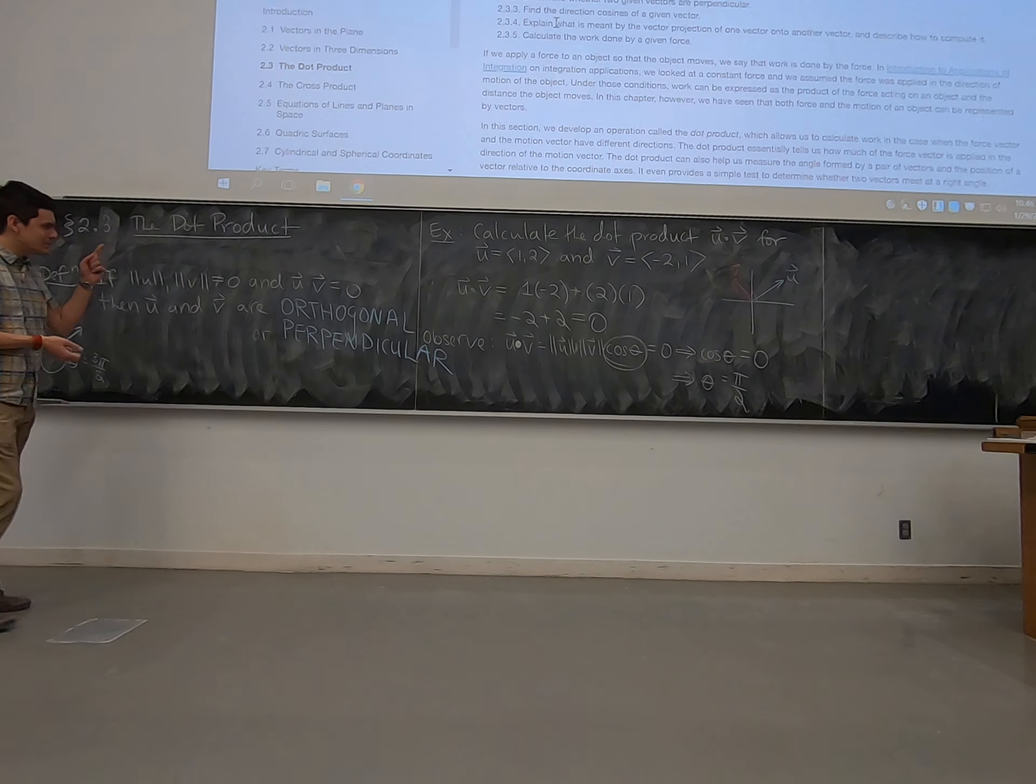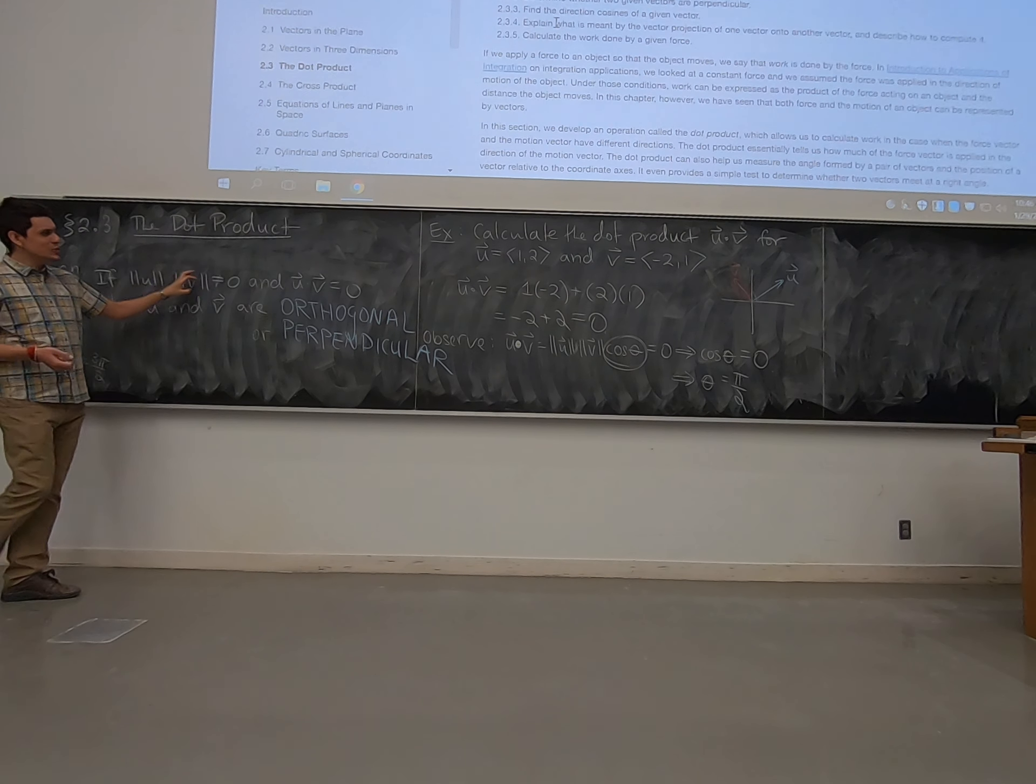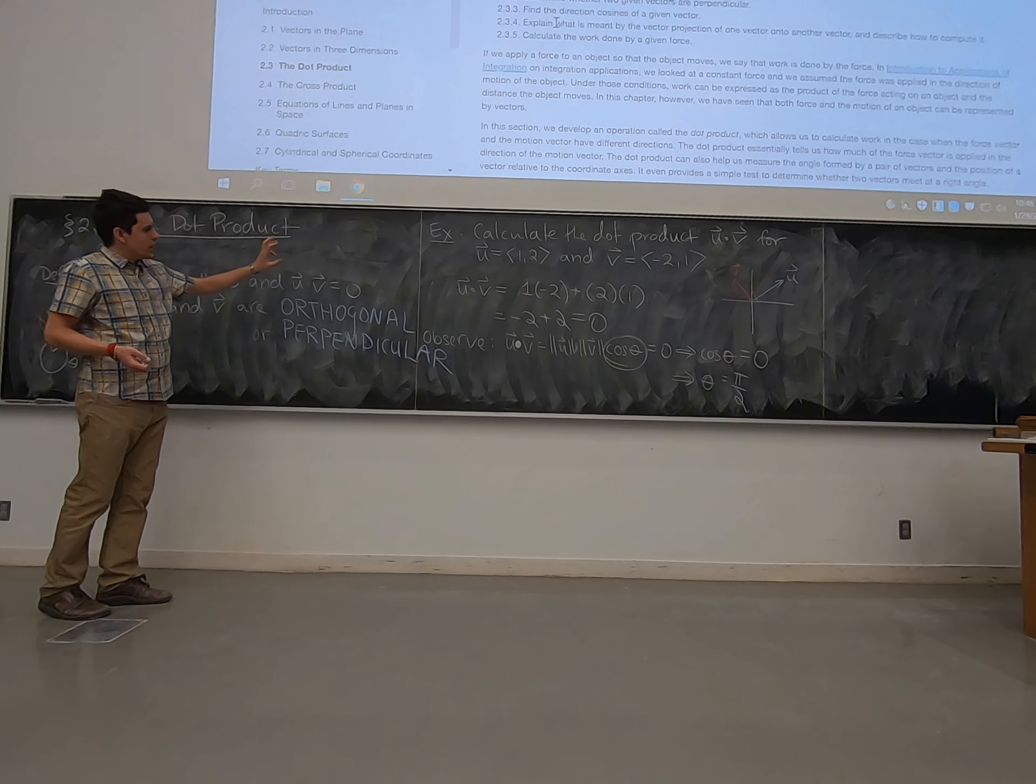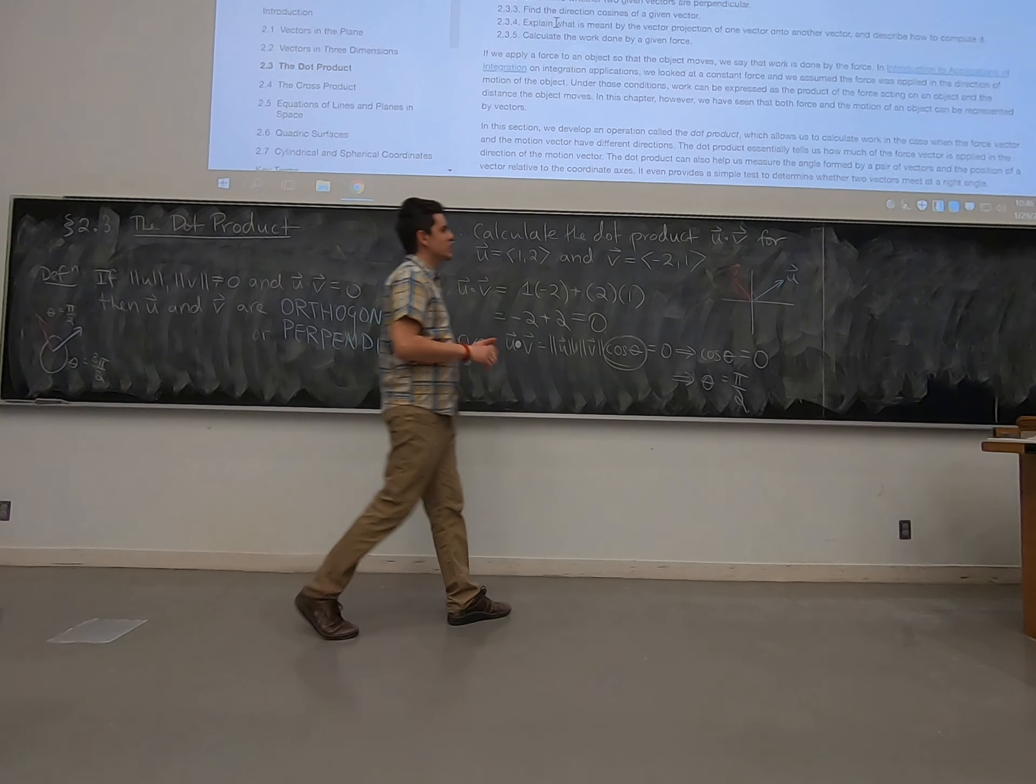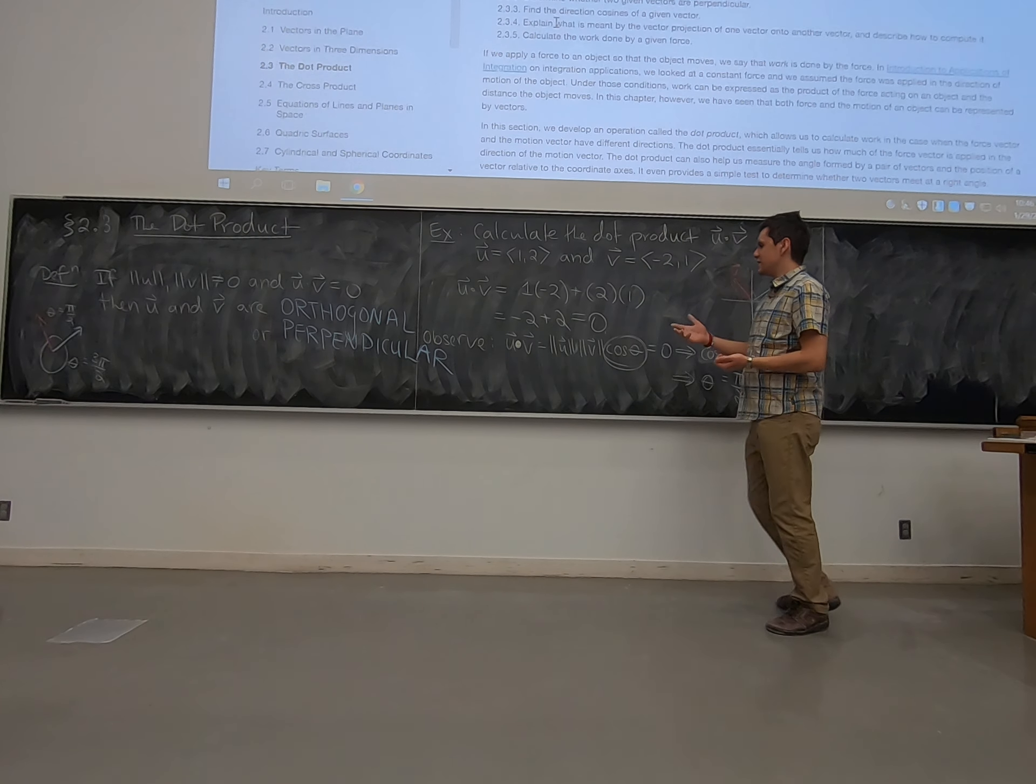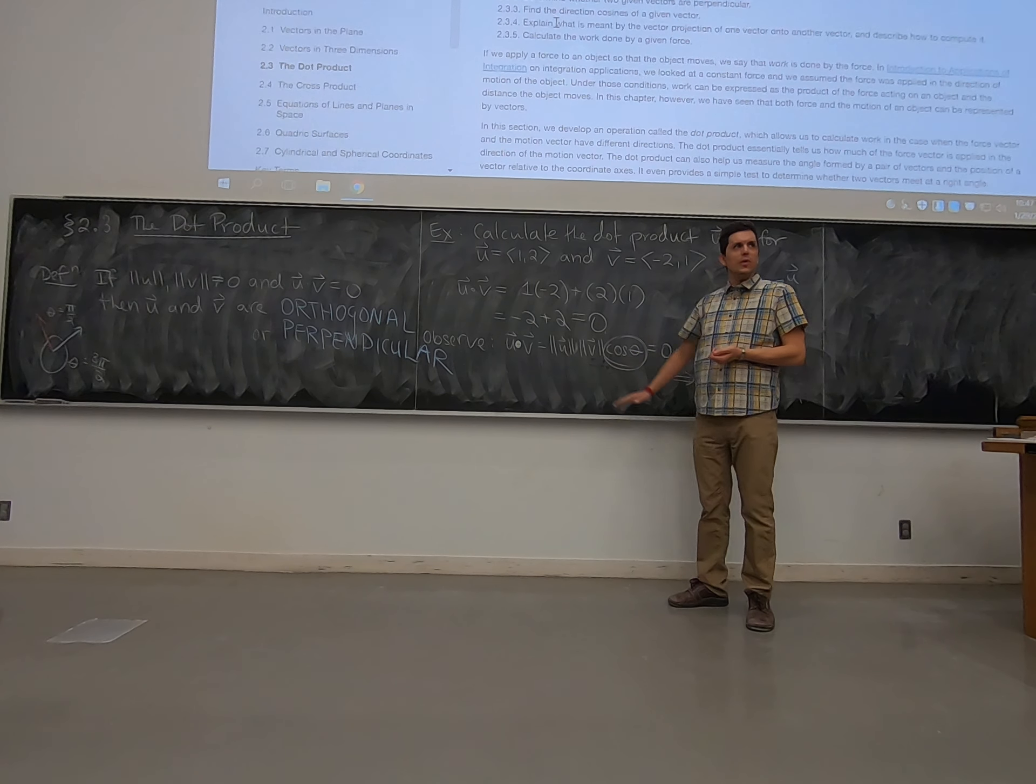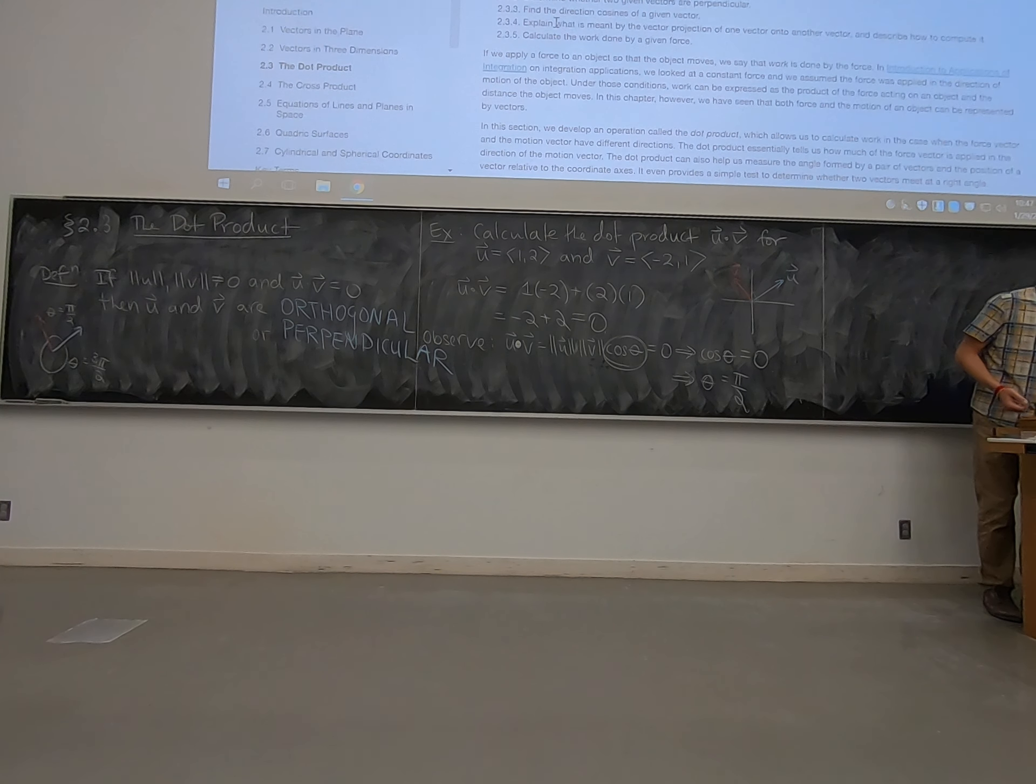Kind of a cool thing, in my opinion, is that this lets us define perpendicular in like 100-dimensional space. That's crazy. We've got this notion of an angle that works in any dimensional space we want. We've been doing it in two-dimensional space because the pictures are easy to draw, but this identity holds in any dimensional space we want. Which is kind of easy.